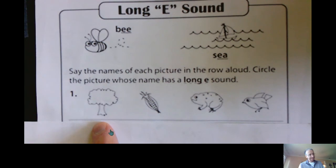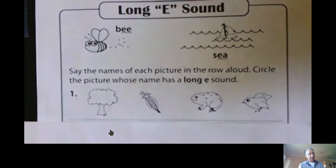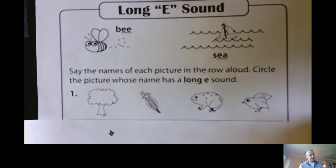Listen to the words and listen for the long E sounds. We're going to circle the one picture that makes the long E. Tree, corn, frog, bird. Which one has the long E sound? Right, tree. Double E.